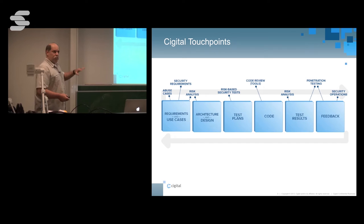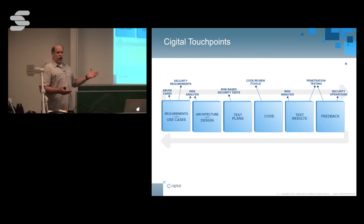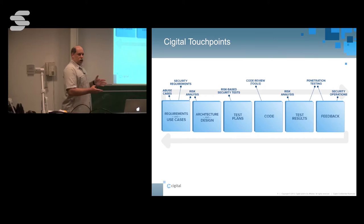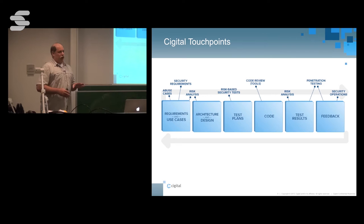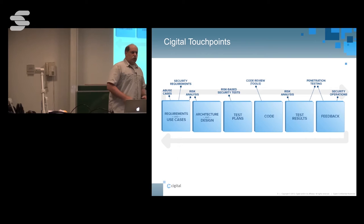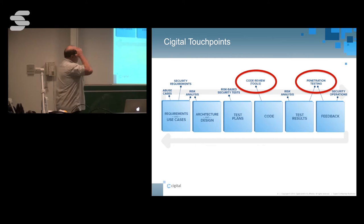Across the top are software security activities that more or less map to the SDLC activities. If we're talking about requirements and use cases from a software security perspective, we're asking: how can I abuse the system? Who are the mis-actors? What are my security requirements? For architecture and design, we talk about design review, architecture analysis, threat modeling — we're looking at the design of the system. In a perfect world, we'd like to do it very early in the lifecycle, but it's perfectly okay to look at the design of a system for flaws even if you've never done so before, because you will find flaws.